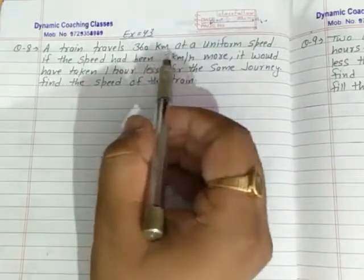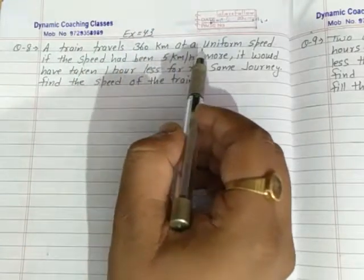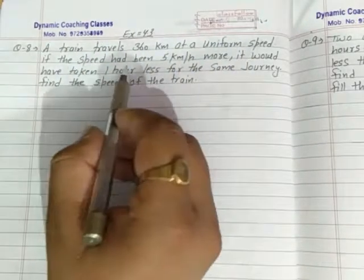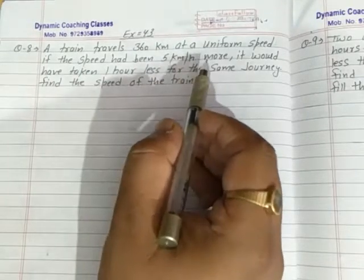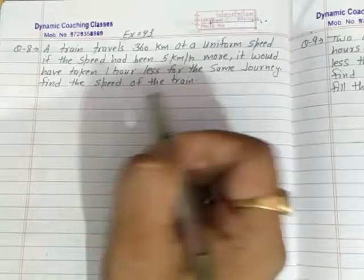So 360 km, this question we have done before in the previous exercise, so simple. A train travels 360 km at a uniform speed and if the speed had been 5 km per hour more, it would have taken 1 hour less for the same journey. Find the speed of the train.